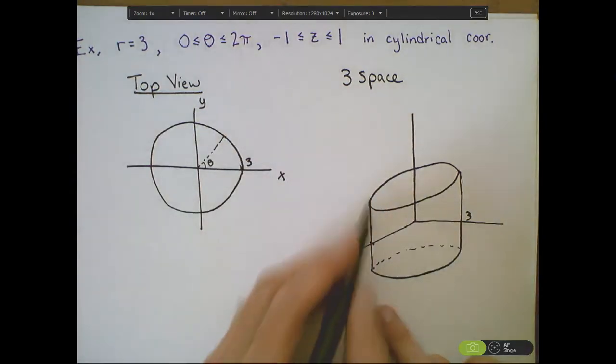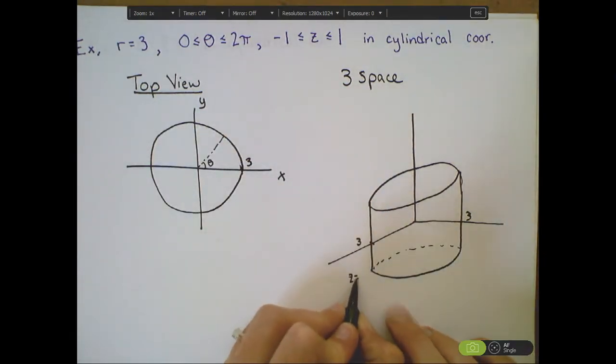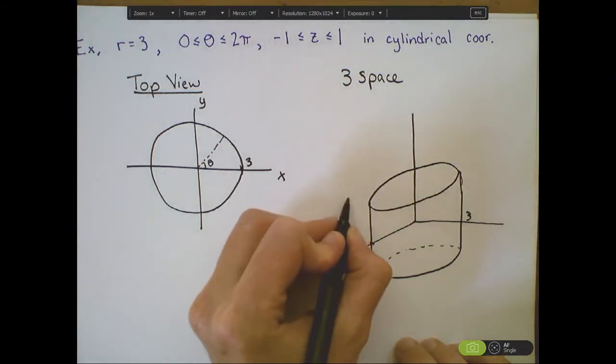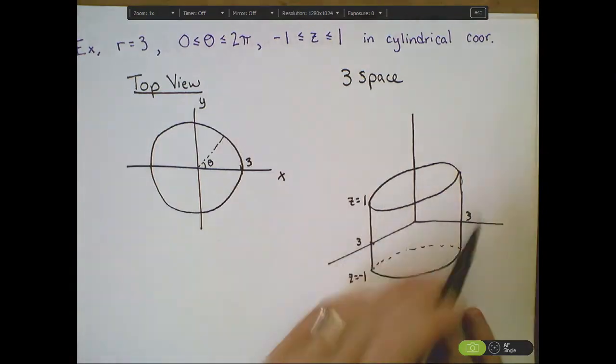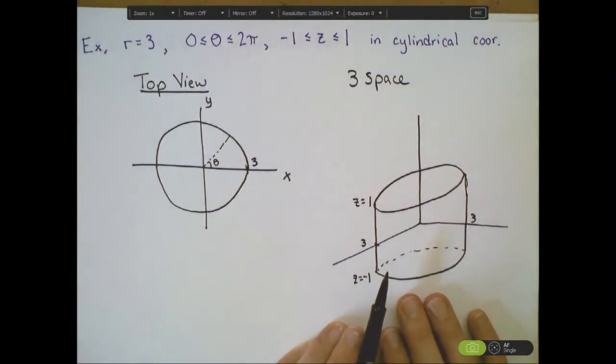A cylinder where the height of the cylinder goes from z equals negative 1 to z equals 1. And this is where the name cylindrical coordinates come from. Drawing cylinders like this is really easy using cylindrical coordinates.